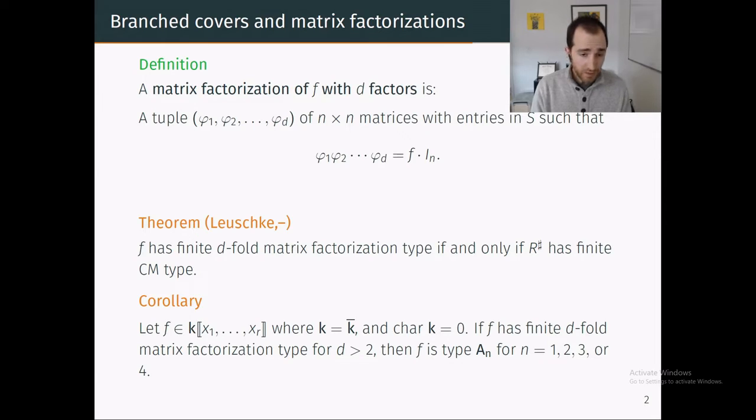If you have a polynomial over an algebraically closed field of characteristic zero which has only finitely many indecomposable d-fold matrix factorizations, and this is for d strictly bigger than two, then it must be of type A_n for n equals one, two, three, or four.